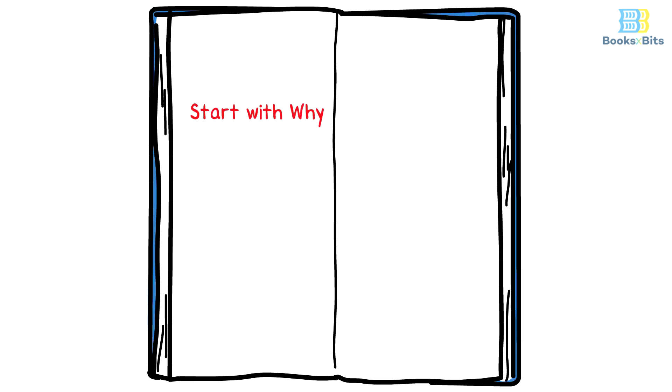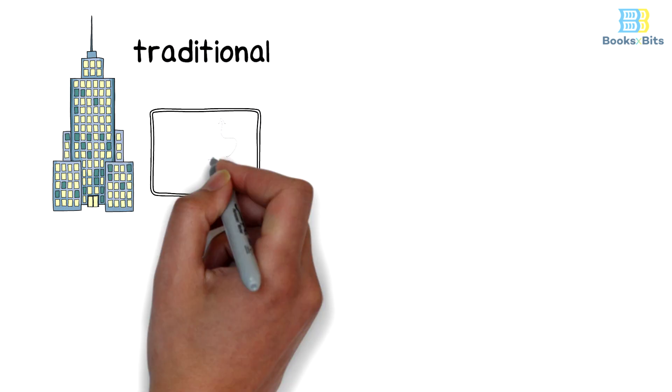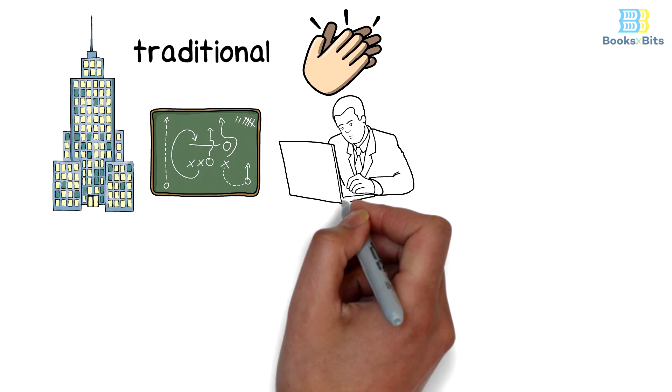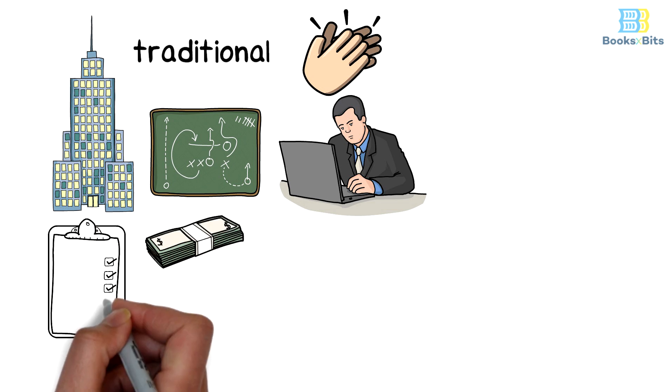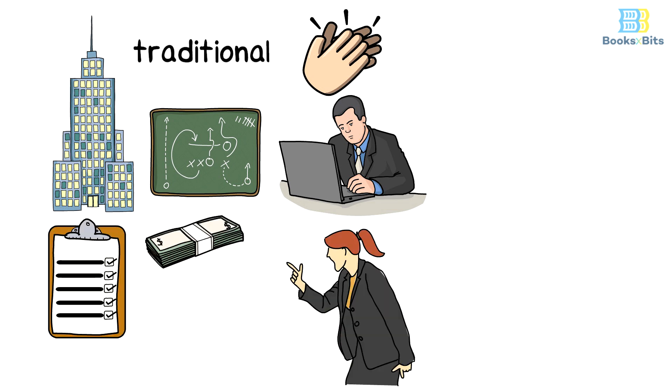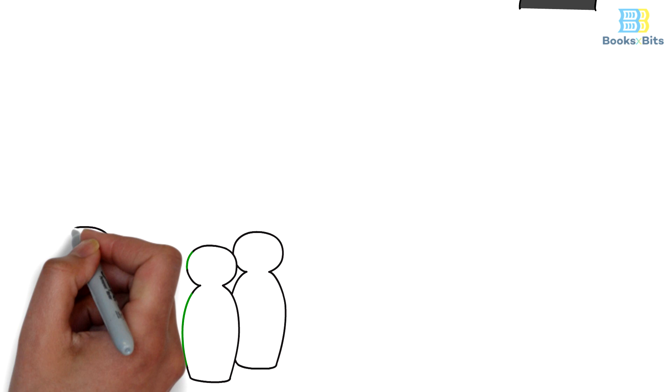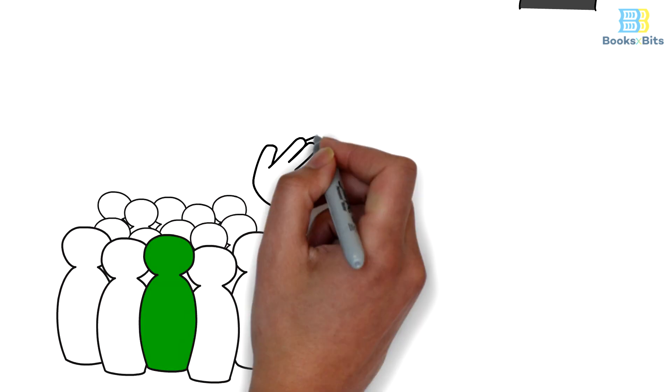Start with Why by Simon Sinek. Today most organizations still rely on the same traditional strategies to motivate their employees, as they give them financial incentives to carry out their tasks or threaten negligent employees with penalties as a result of their negligence at work.